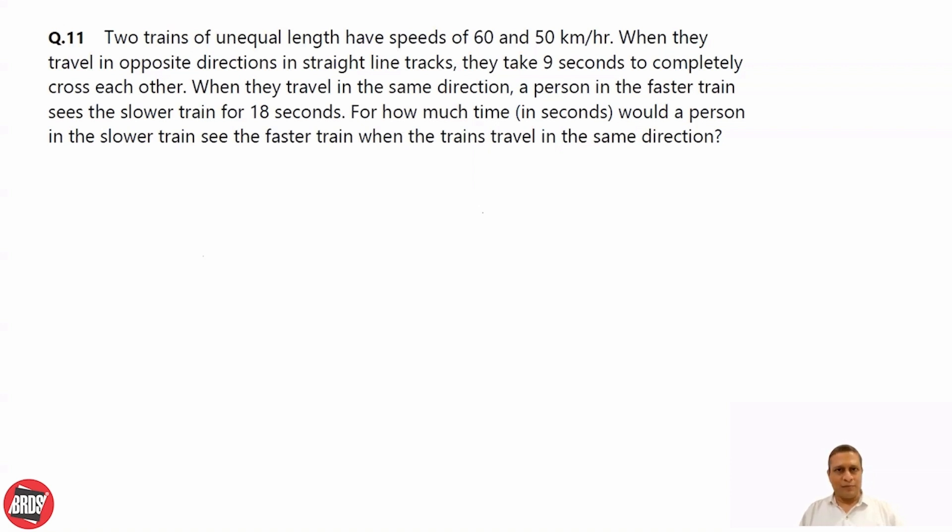And when they travel in same direction, they are saying, person in faster train sees the slow train for 18 seconds. And now they are asking for how much time would a person in slow train see the faster train when the trains travel in same direction. So first, let's use this information.